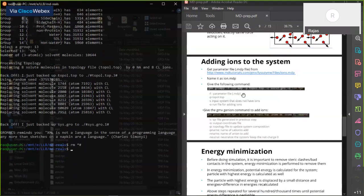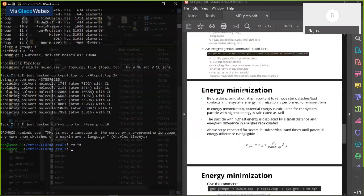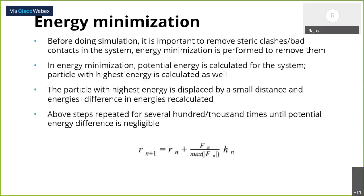Once we are done with the genion step, we'll move on to energy minimization. Before we do a simulation it's important to remove steric clashes or bad contacts in the system. There could be atoms overlapping in the protein structure, or water molecules that were added may have ended up in the same position as protein atoms — these are all bad contacts or steric clashes.